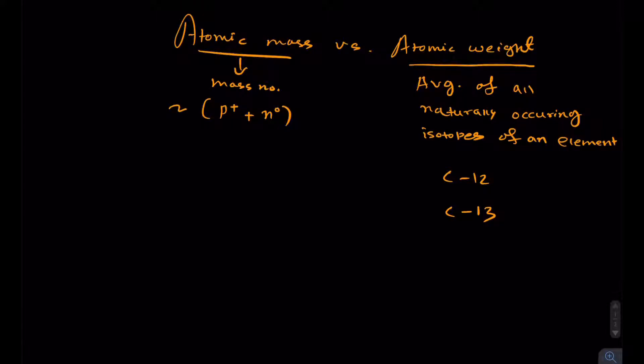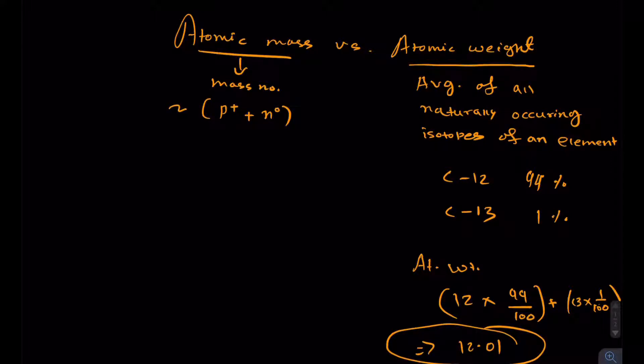For example, there's carbon-12 and carbon-13. These are two isotopes of carbon. Carbon-12 is about 99% very abundant in nature, and carbon-13 is only 1% abundant. What is the atomic weight? If you want to find the atomic weight, what you have to do is carbon-12, which is 12 times 99%, so you divide by 100, then you add them to carbon-13 times 1 over 100. If you do this, you're gonna get 12.01.